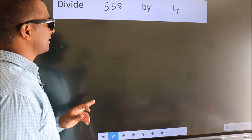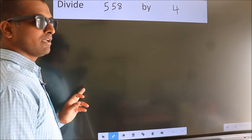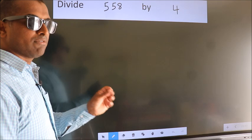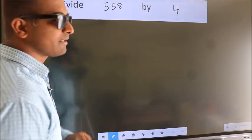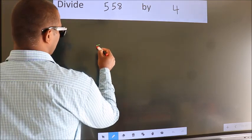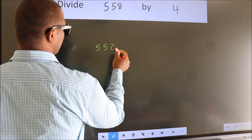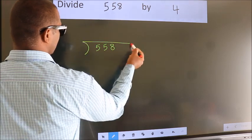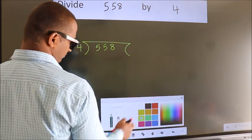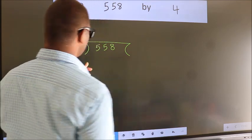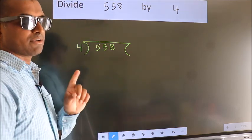Divide 558 by 4. To do this division, we should frame it in this way. 558 here, 4 here. This is your step 1.